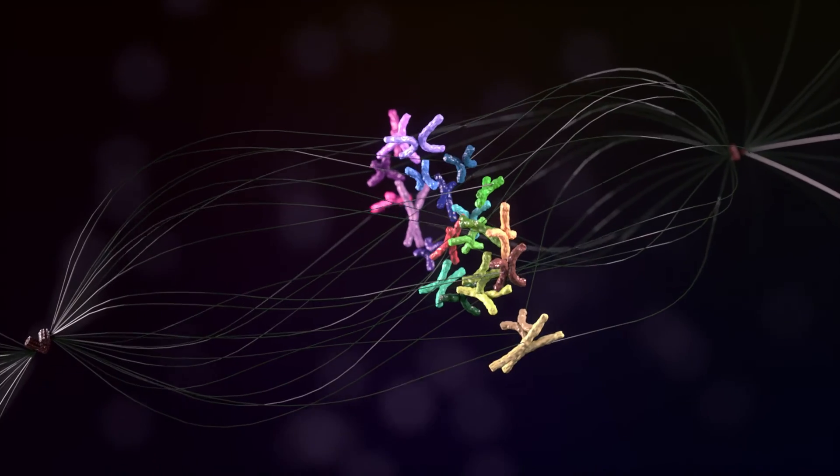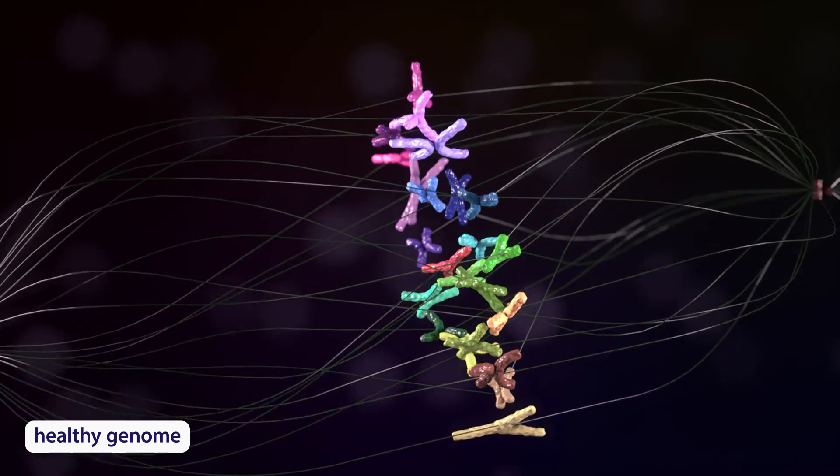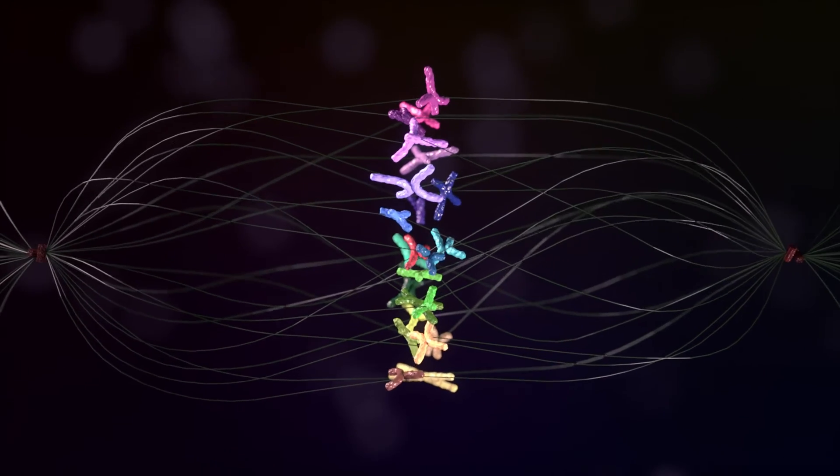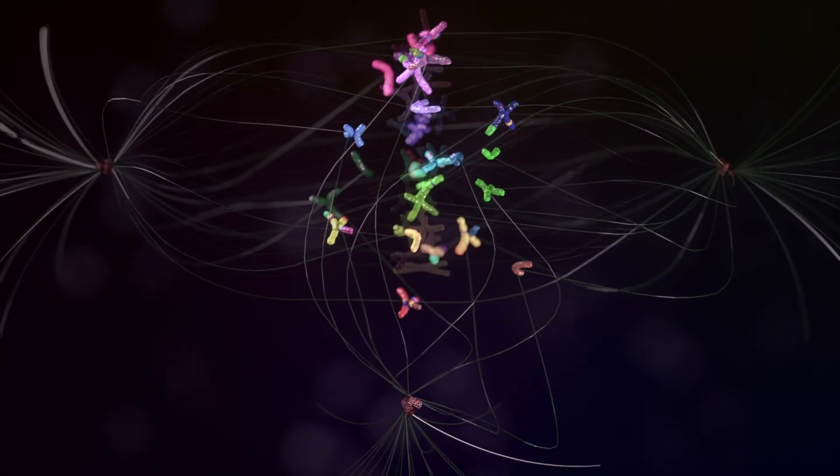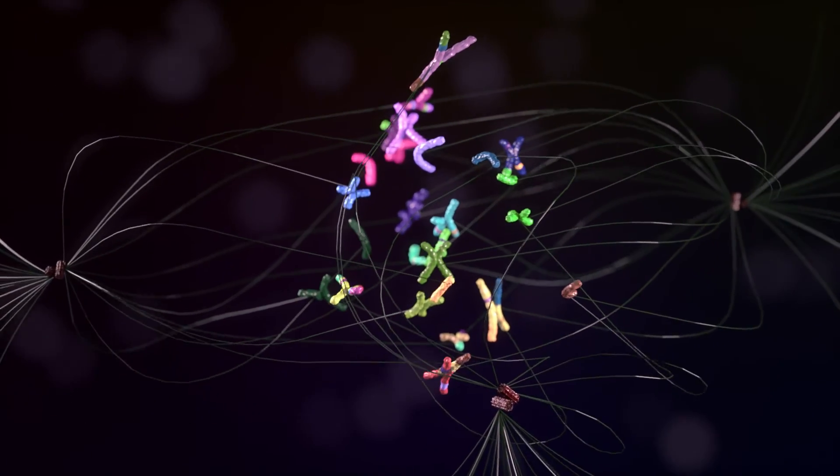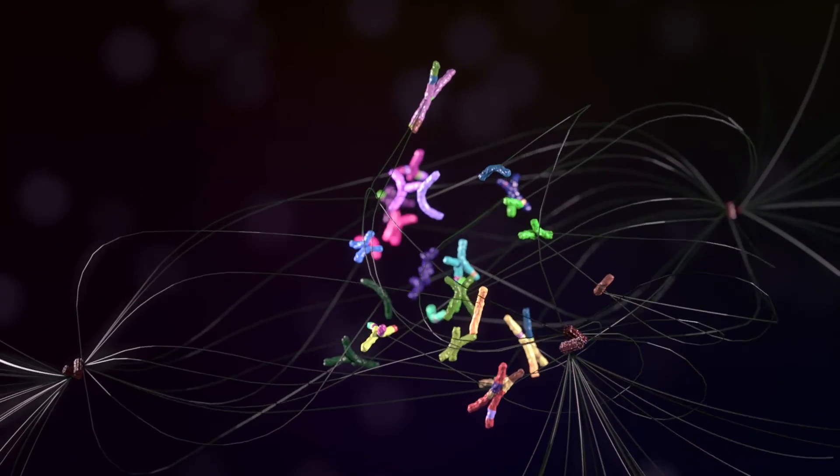For cells to grow and specialize normally, the genome needs to be healthy and intact. However, errors can occur in the cell's DNA. When the errors build up, it can cause certain cells to start growing uncontrollably, leading to leukemia or lymphoma.